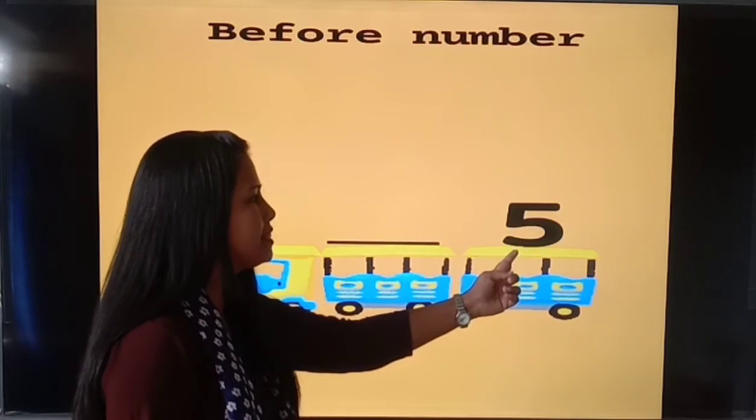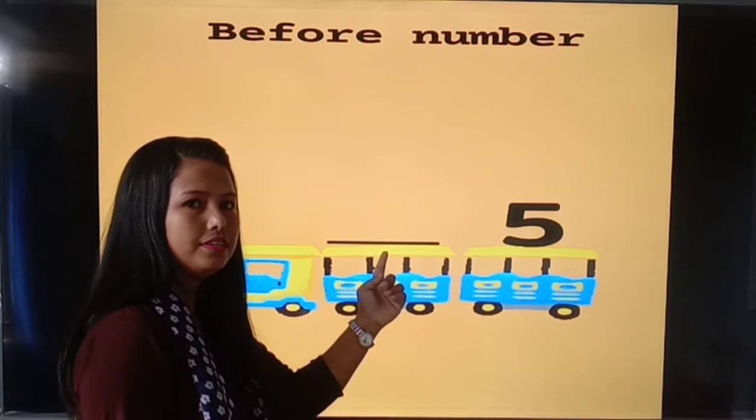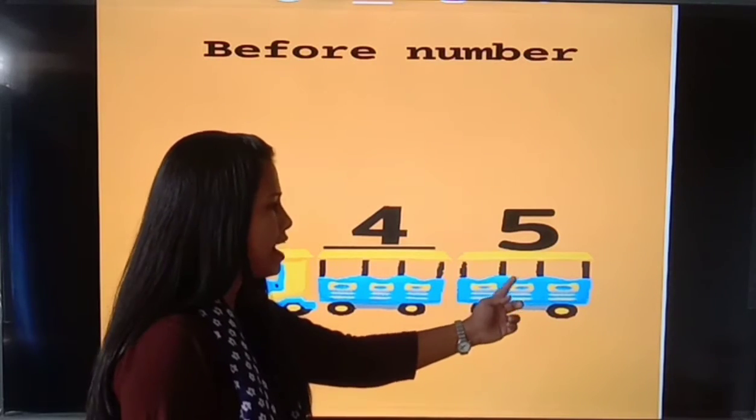Five. Which number is this? Five. Then what comes before five? Yes, four. Four comes before five.